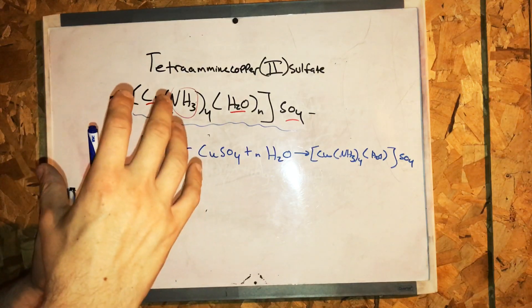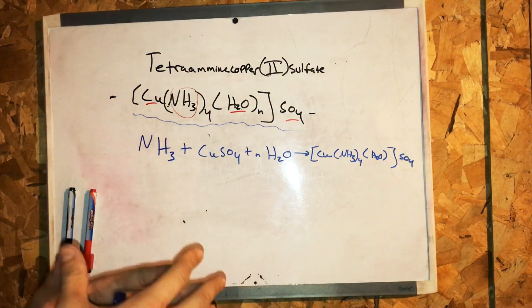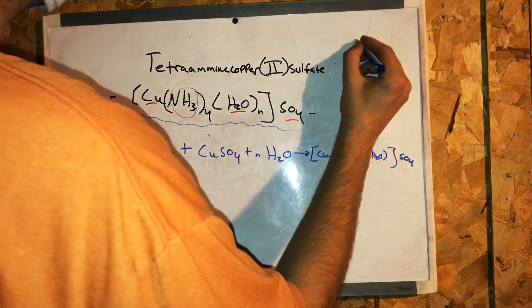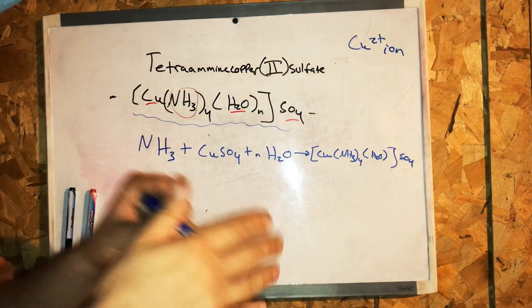The dark violet color is used to verify the presence of the Cu2+ ion, which is the copper ion, in solution.